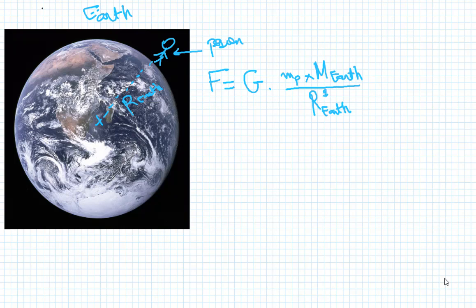Of course, squared. Let's calculate this force. F is equal to G equals to 6.67 times 10 to the power negative 11.